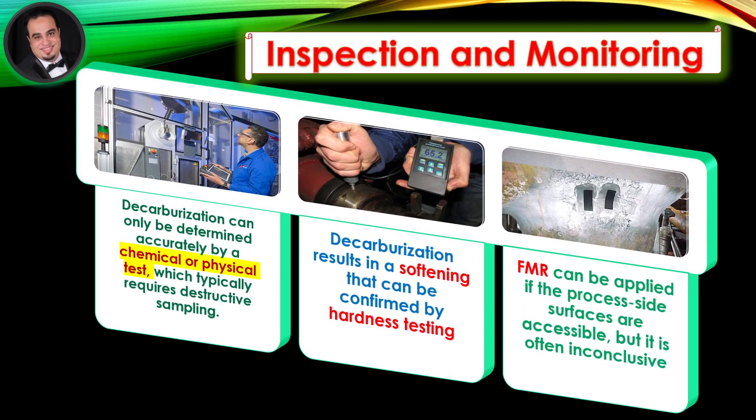Inspection and monitoring: Decarburization can only be determined accurately by a chemical or physical test, which typically requires destructive sampling. Sampling location, condition, and preparation are critical. Decarburization results in a softening that can be confirmed by hardness testing. If the depth of decarburization is sufficient to enable accurate hardness testing results, field metallographic replication can be applied if the process side surfaces are accessible, but it is often inconclusive.